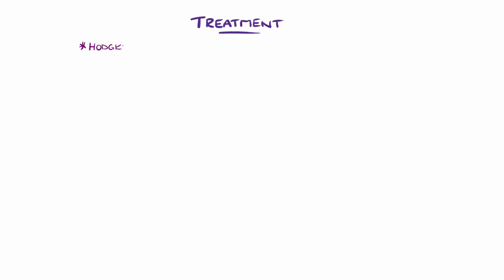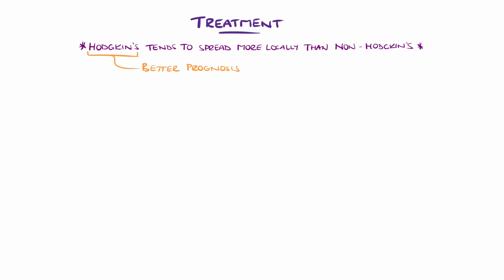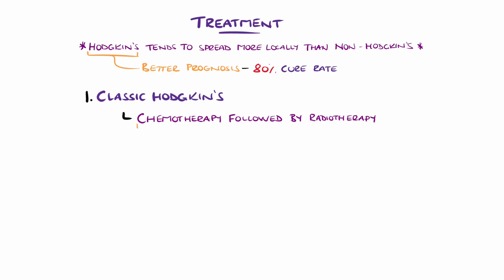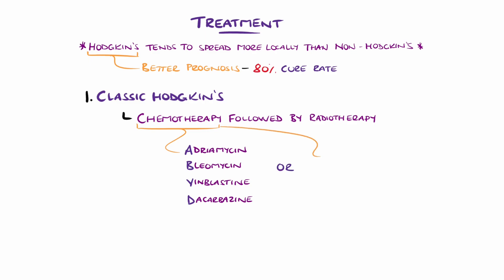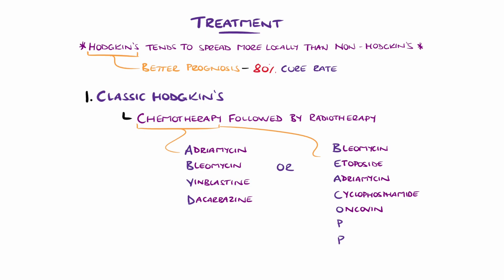Hodgkin's lymphoma is associated with a better prognosis than non-Hodgkin's, partly because in Hodgkin's the spread tends to be from lymph node to lymph node in a local region, whereas non-Hodgkin's often spreads to distant sites. Hodgkin's is associated with over an 80% cure rate, so the goals are often cure and limitation of side effects. Treatment for classical Hodgkin's lymphoma usually involves chemotherapy followed by radiotherapy, the most common regimen being ABVD — adriamycin (also known as doxorubicin), bleomycin, vinblastine, and dacarbazine. Another common regimen is BEACOPP — bleomycin, etoposide, adriamycin, cyclophosphamide, oncovin (vincristine), procarbazine, and prednisolone.